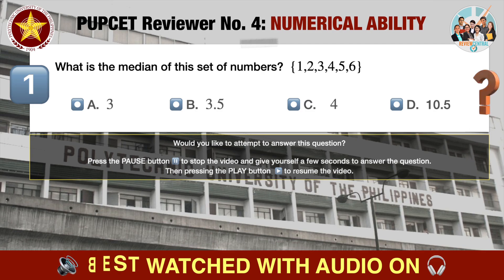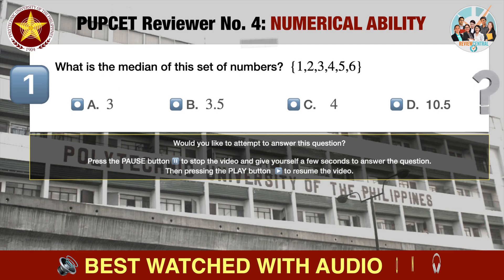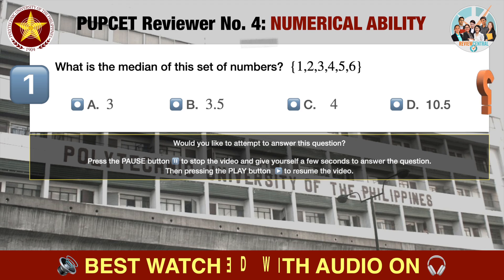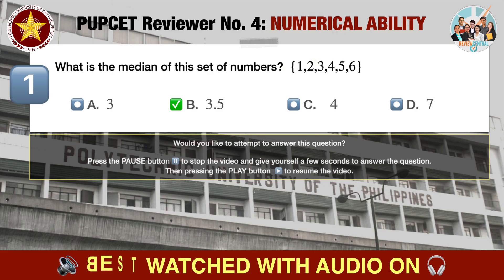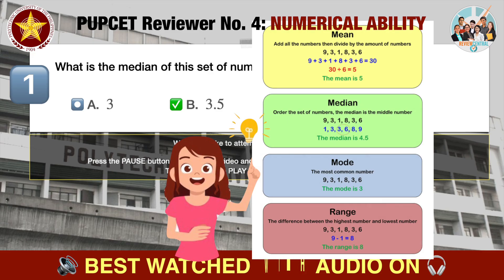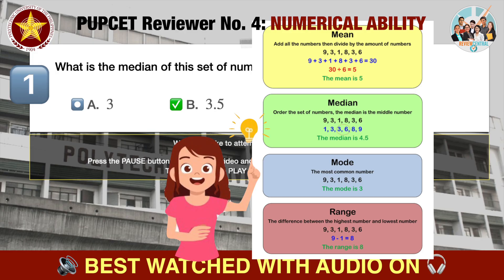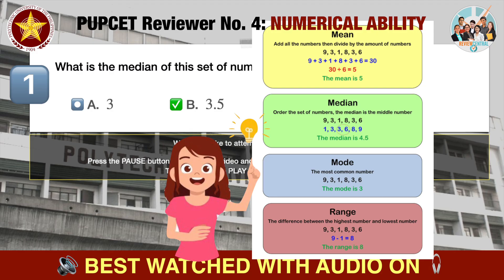Question number one: what is the median of this set of numbers: 1, 2, 3, 4, 5, 6? A. 3, B. 3.5, C. 4, D. 10.5. The correct answer is B, 3.5. Let's first review your definitions of mean, median, mode, and range. The arithmetic mean is found by adding the numbers and dividing the sum by the count of numbers — this is what is most often meant by an average. Median is the middle value in a list ordered from smallest to largest. The mode is the most frequently occurring value. Range is the difference of the highest and lowest values.